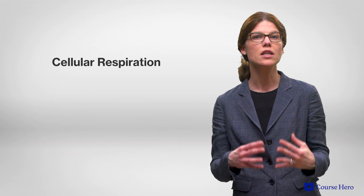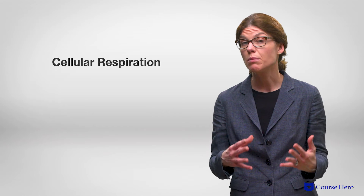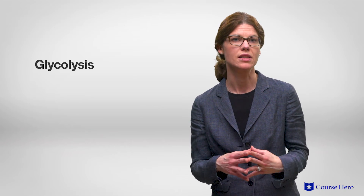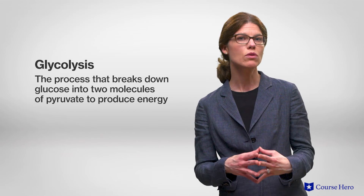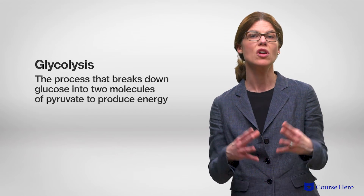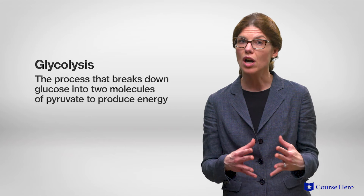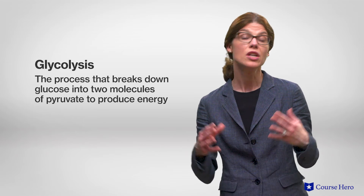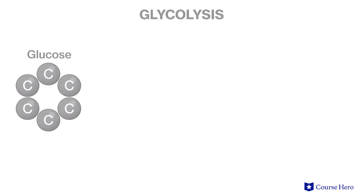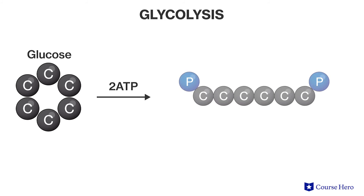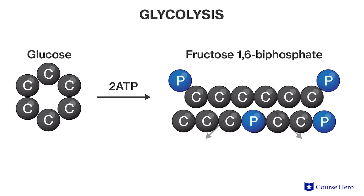In order to use the chemical energy from carbohydrates, living organisms undergo cellular respiration, a metabolic process. The first step of cellular respiration is glycolysis — the process that breaks down glucose into two molecules of pyruvate, a three-carbon compound, to produce energy. As such, it is a catabolic pathway that is exergonic.